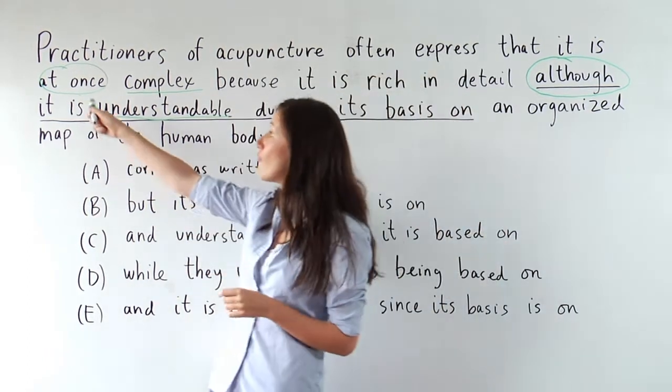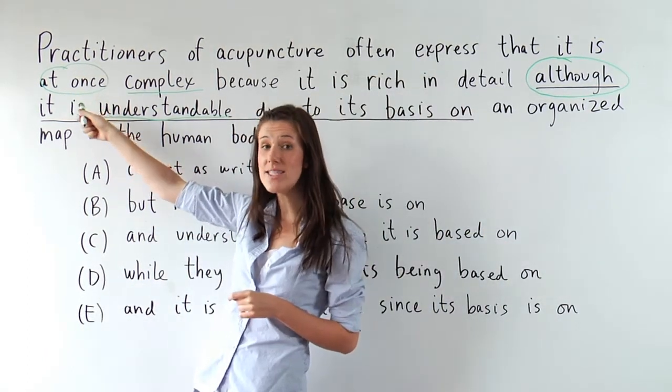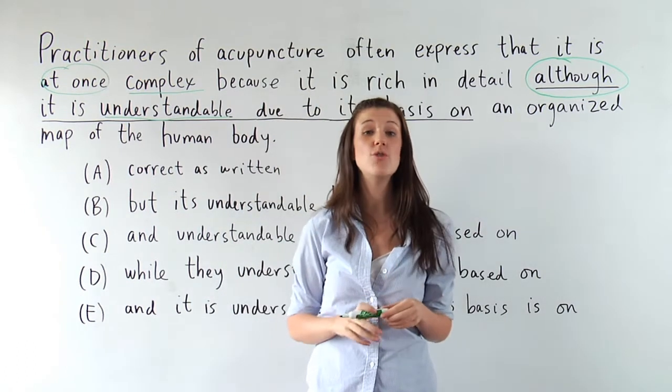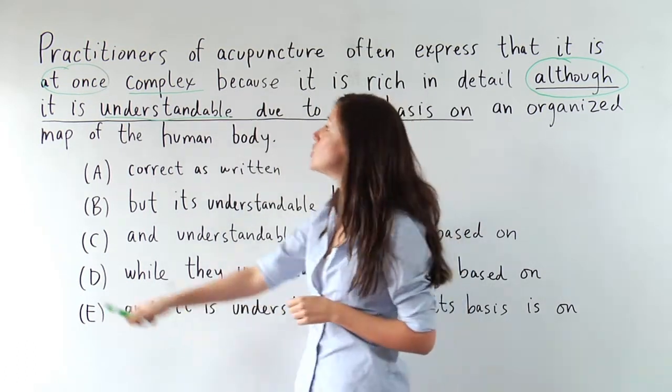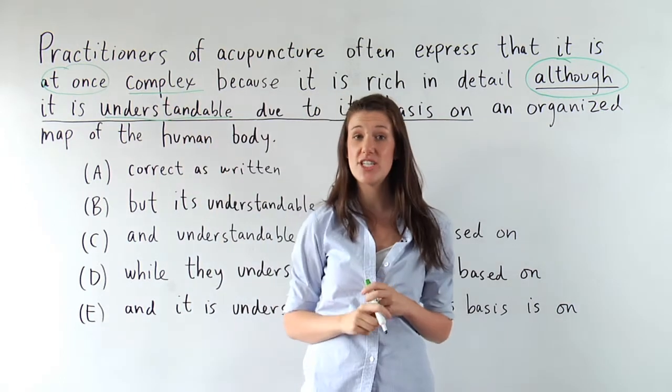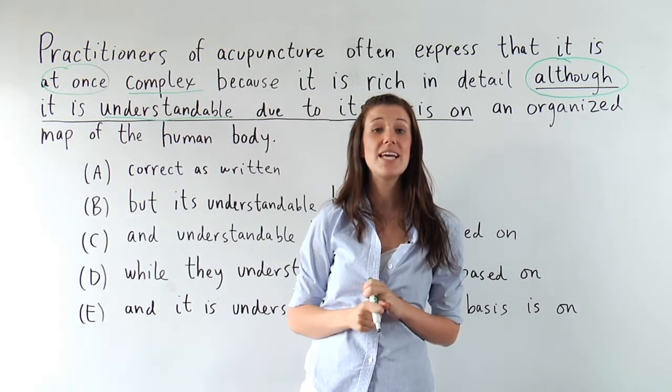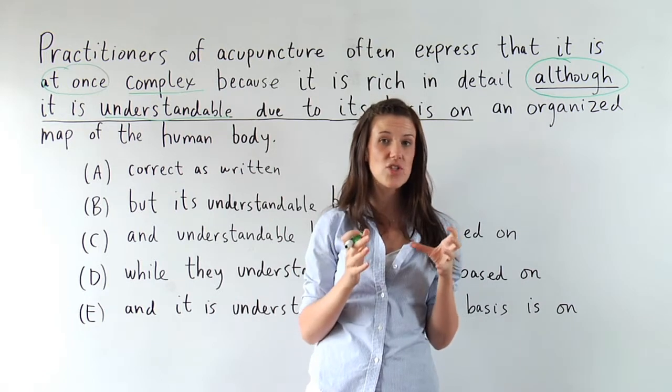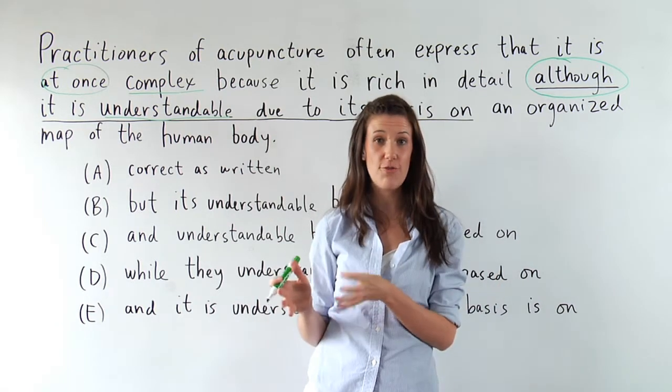So, our first connector buddy here, at once, is not underlined, which means it can't change. So I've got at once, complex. Complex is an adjective. So I know I have to connect the adjective complex to another adjective.